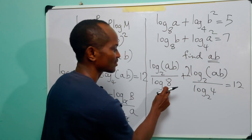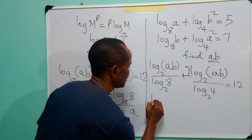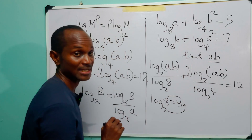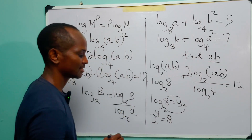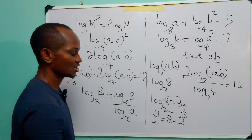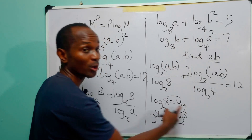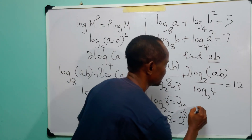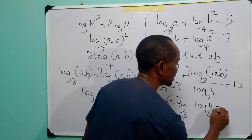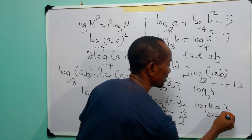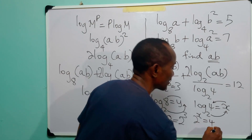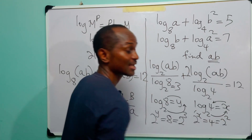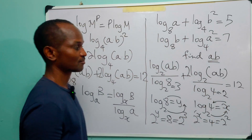We can simplify these denominators. Log base 2 of 8 equals 3, because 2 raised to power 3 equals 8. Similarly, log base 2 of 4 equals 2, because 2 raised to power 2 equals 4. So we can replace log base 2 of 8 with 3 and log base 2 of 4 with 2.